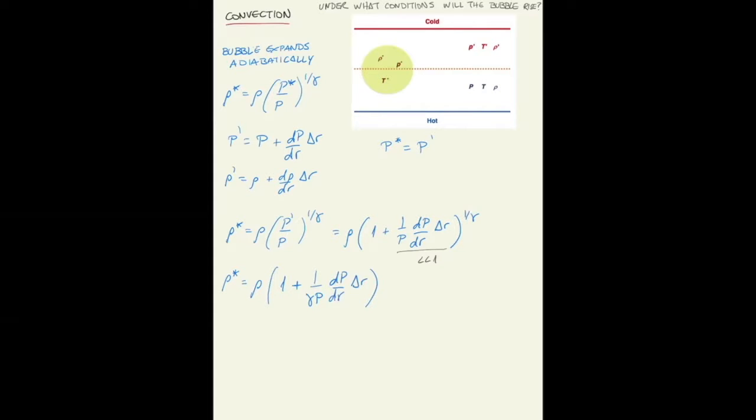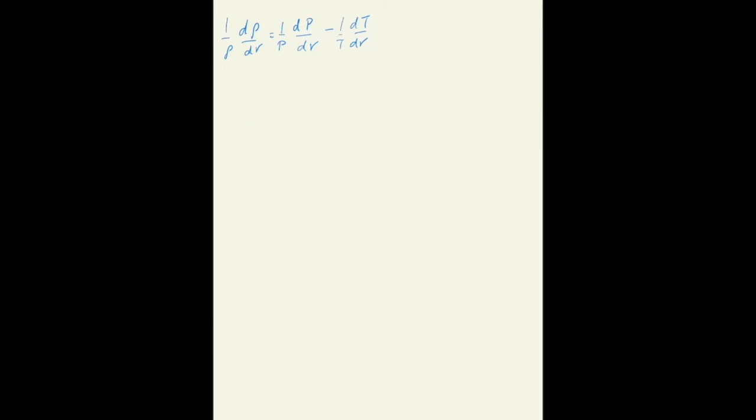Now let's use the equation of state to write this in terms of temperature. Recall that the equation of state is pressure equals density times temperature times the gas constant R. Taking the derivative in differential form, d ln rho equals d ln p minus d ln t. Dividing by r and expanding the logarithms gives an equation for rho dr.